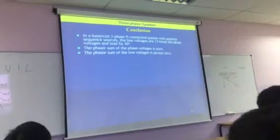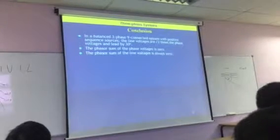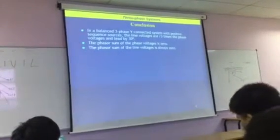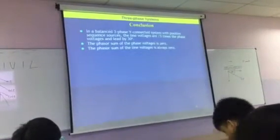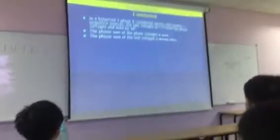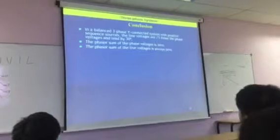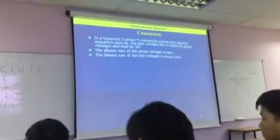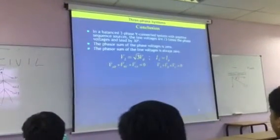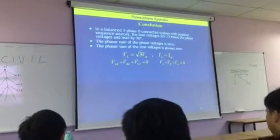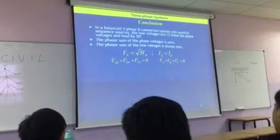Conclusion. In a balanced three-phase Y-connected system with positive sequence sources, the line voltages are root three times the phase voltages, and lead by 30 degrees. The phasor sum of the phase voltages are zero, and the phasor sum of the line voltages are zero as well. And that's basically the equations to represent that. That's the key, root three.